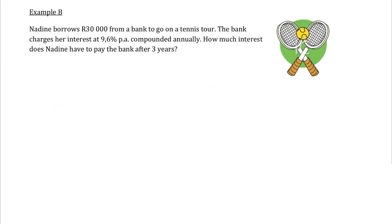Okay, let's do example B with Nadine who's going on tennis tour. And remember, she borrows 30,000 Rand. So remember that when we borrow, the loan is always at the beginning of the investment. The bank's charging her an interest rate of 9.6% per annum compounded annually. So our interest rate is 9.6 out of 100, which as a decimal is 0.096. How much interest does Nadine have to pay after three years?